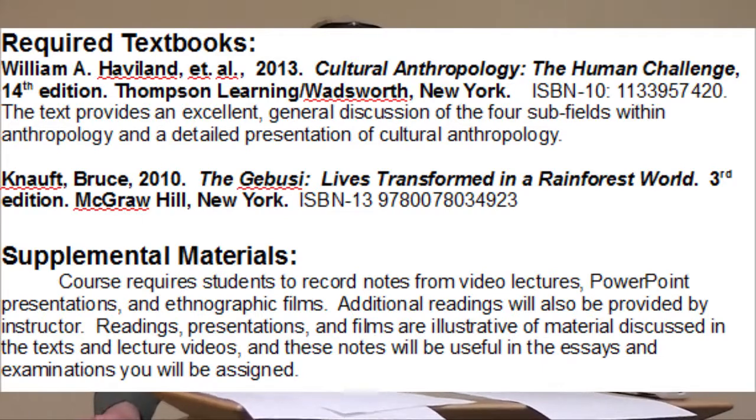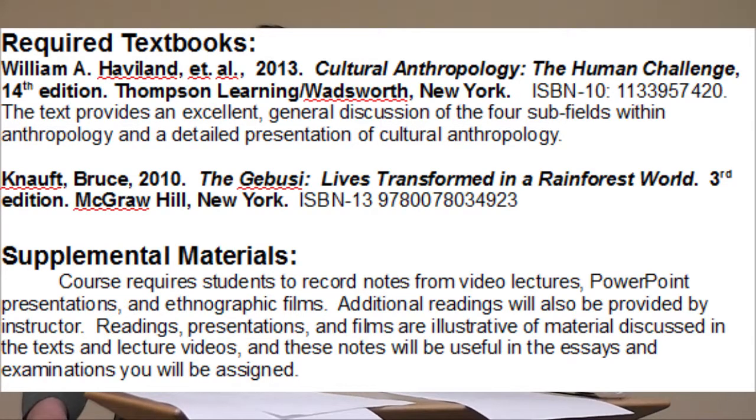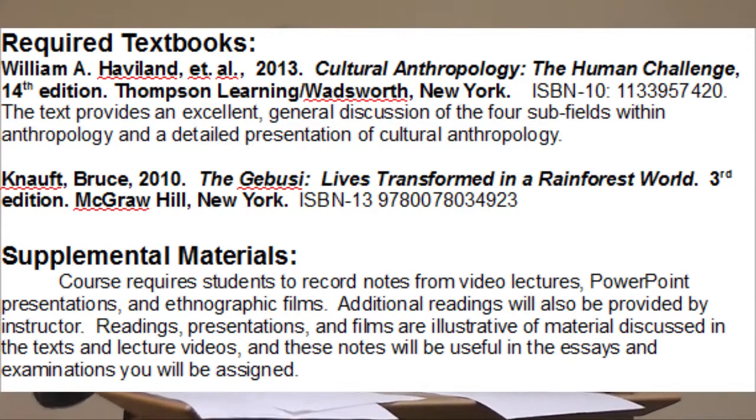Like any course, this course requires a textbook. The required textbook is William Haviland et al.'s 2013 Cultural Anthropology: The Human Challenge, 14th edition, put out by Thompson Learning Wadsworth Publishing Company in New York. The ISBN-10 number is 1133957420. I chose this textbook because it provides an excellent general discussion of the four subfields of anthropology and a detailed presentation of cultural anthropology. In this class, you're going to have a series of online lectures given by myself and some of my colleagues. Each week you will have a series of online lectures accompanied by a reading assignment from your textbook and also supplemental materials.